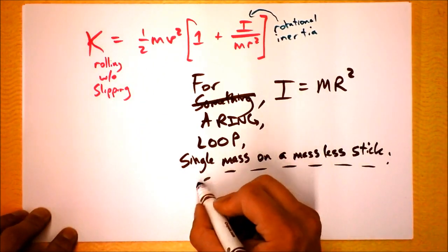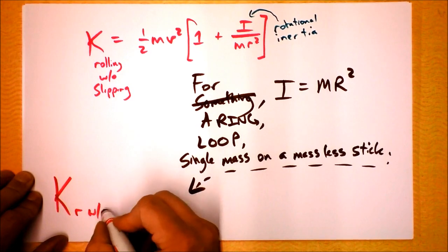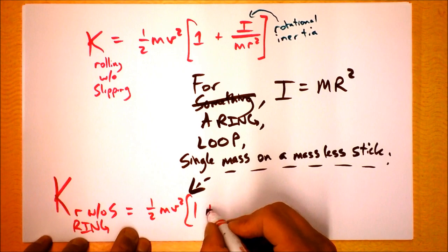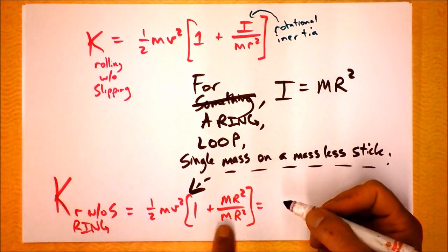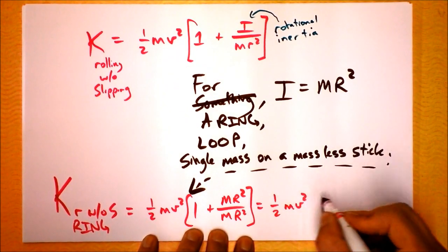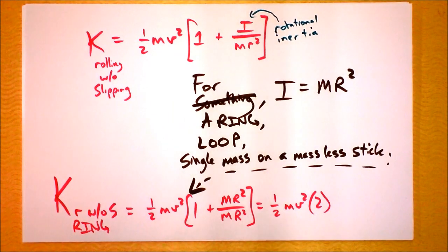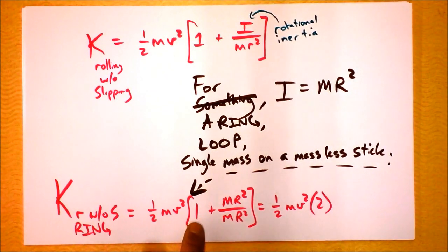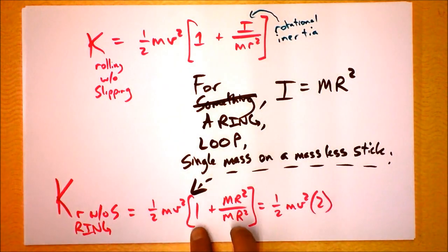And so then this equation becomes, look at this. This equation becomes simply k rolling without slipping for a ring becomes one half m v squared times one plus, I is m r squared. And we're supposed to divide that by m r squared. Well, that's just two. We've got one half m v squared times two. So the kinetic energy is doubled if something is rolling without slipping, and it's a ring or a loop. What this says is that half of the kinetic energy of the system is the fact that the center of mass is moving, and the other half of the kinetic energy of the system is the fact that it's rolling, that it's rotating.